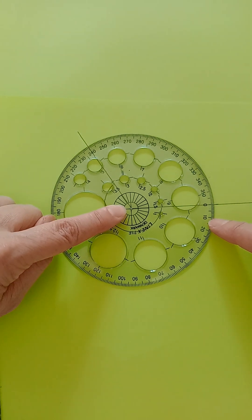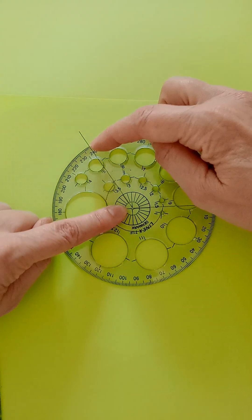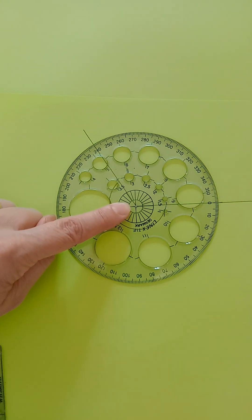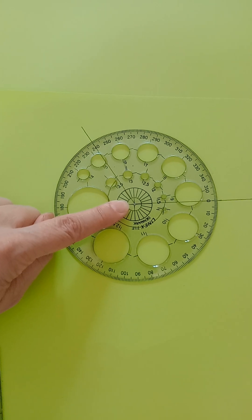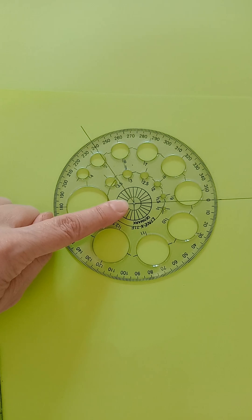And then you follow the scale round, 10, 20, 30, all the way round, until you get to the other side of the angle, and that's 240 degrees. So the size of this reflex angle is 240 degrees.